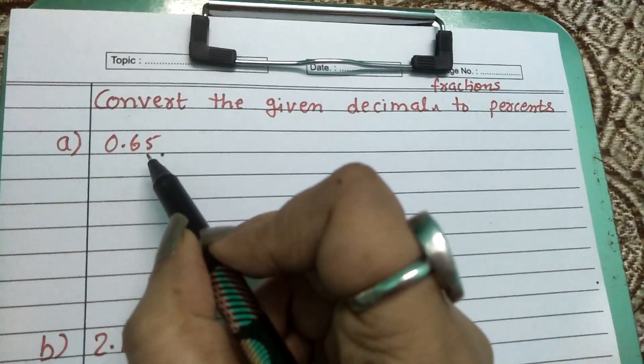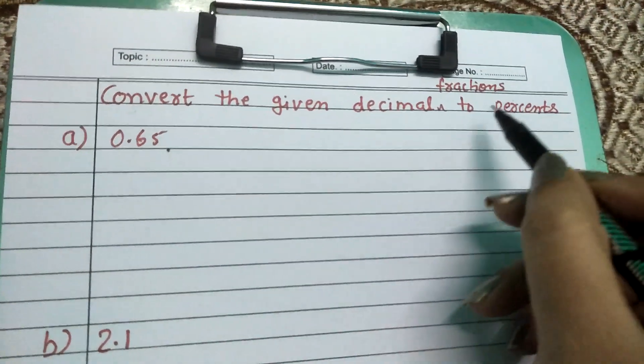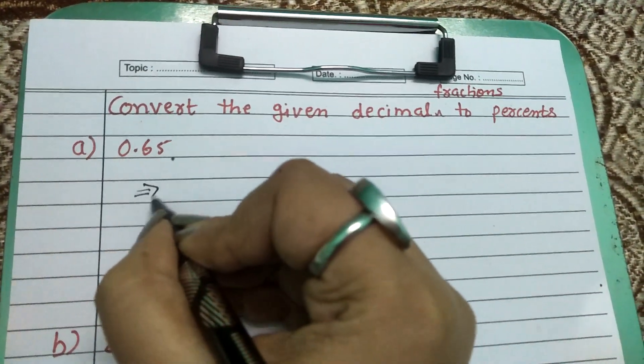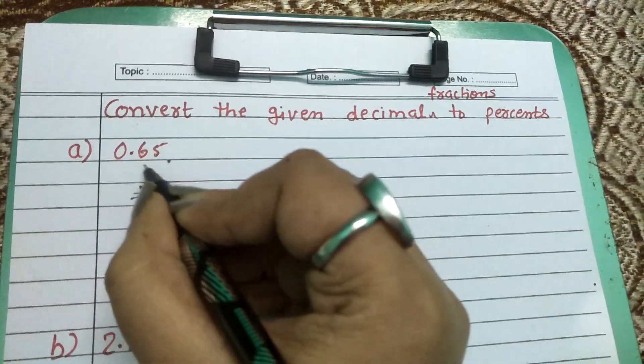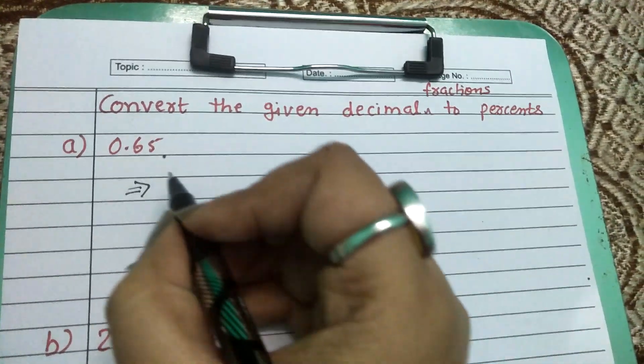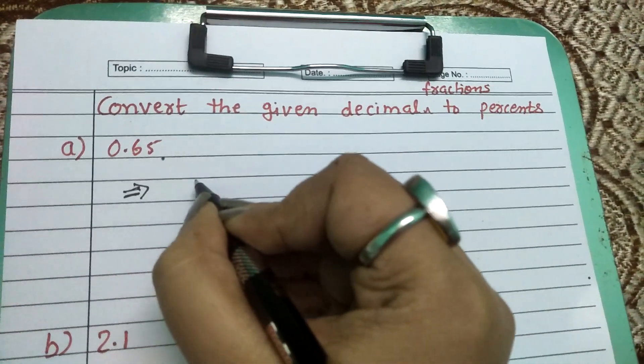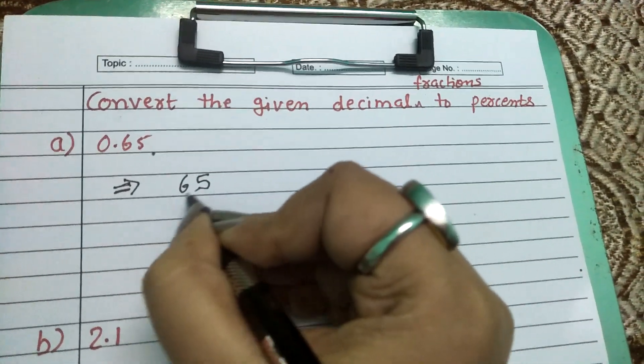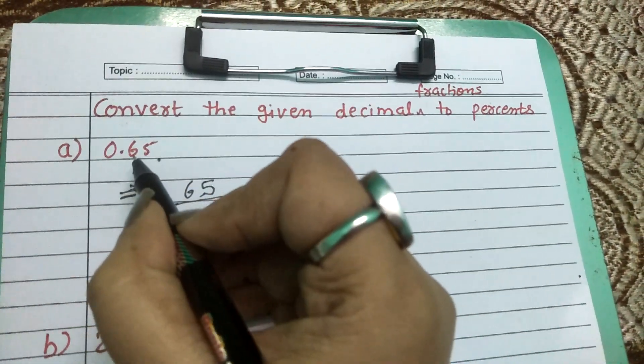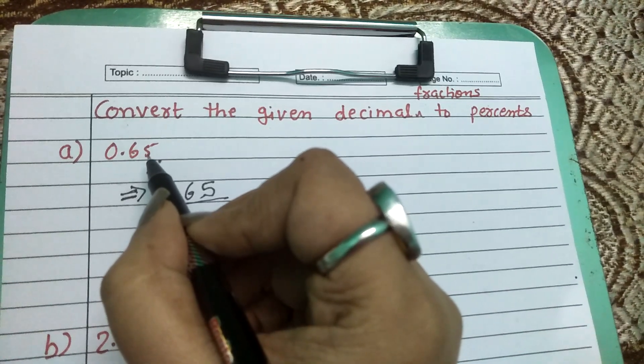Now we have to convert these numbers into percent. It's very simple. 0.65 - first we have to convert it into a fraction, and it is equal to 65 upon hundred. Here the decimal is on the hundred place, so it's 65 upon 100.